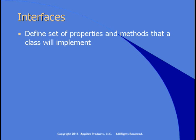An interface defines a set of properties and methods that a class will implement. You can think of them as being sort of like abstract classes. Like an abstract class, an interface contains no implementation code.